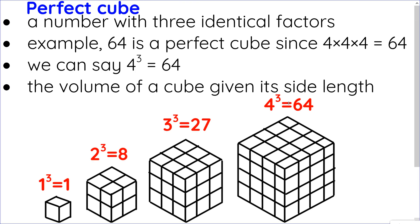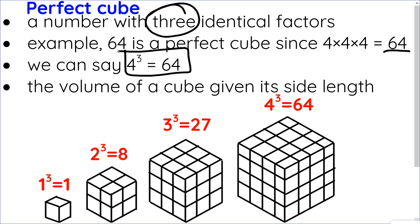Let's look at cubes. A perfect cube is a number with three identical factors. For example, 4 times 4 times 4 is 64, so 64 is a perfect cube — we say 4 cubed is 64. Pictorially, this represents the volume of a cube given its side length. If the length, width, and height are all 3, then 3 times 3 times 3 is 27, so the volume is 27 because 3 cubed is 27.